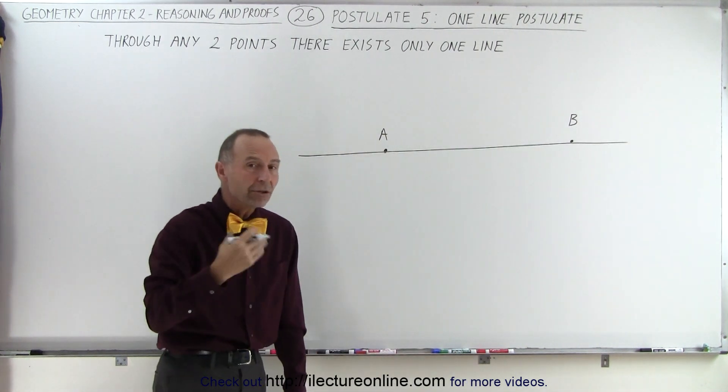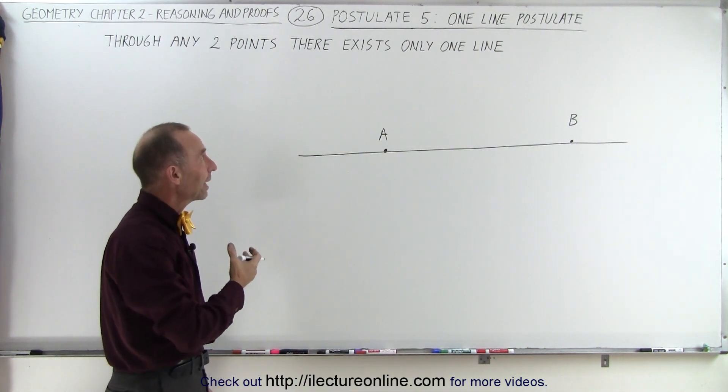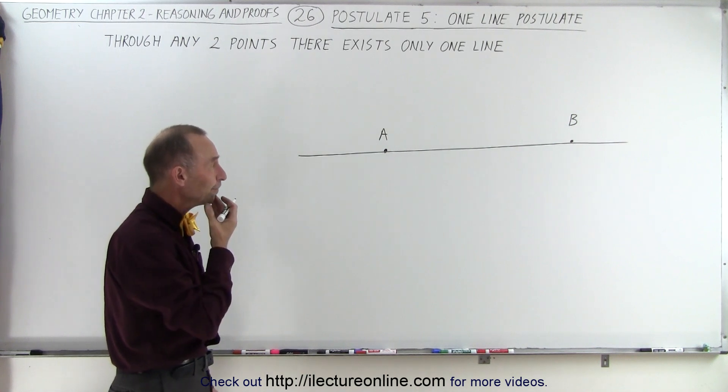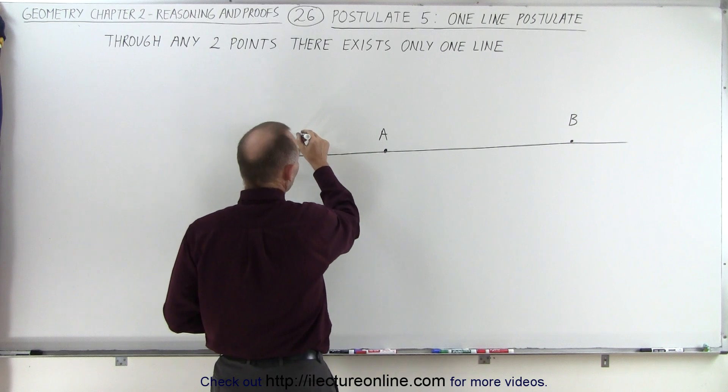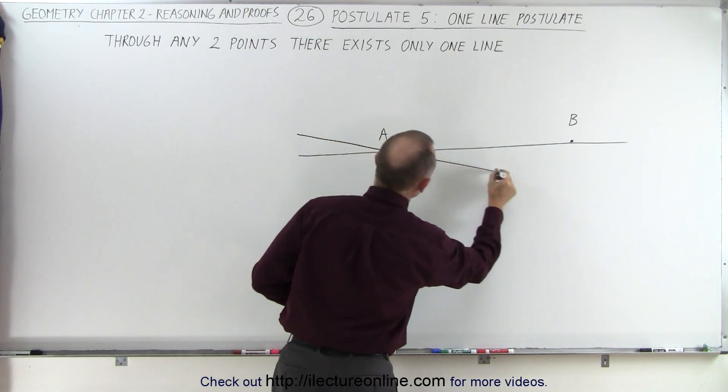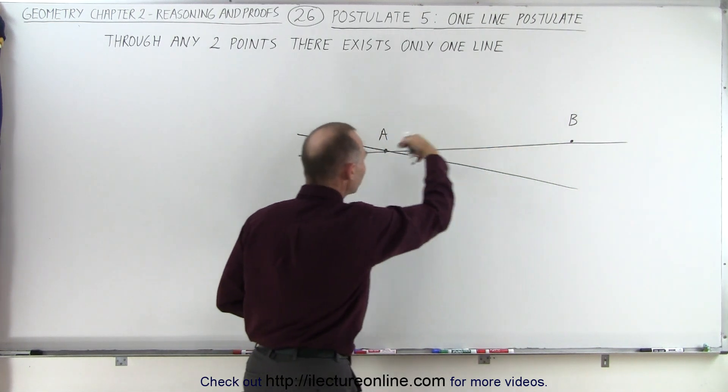Now would there be any other lines that connect A and B? Well we can only put a line on the very same spot or maybe I can draw another line at a slightly different angle, but notice that line will not go through B if it goes through A.